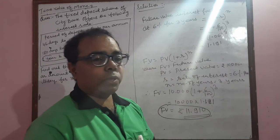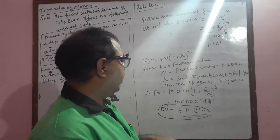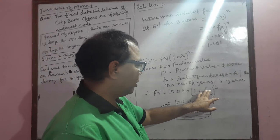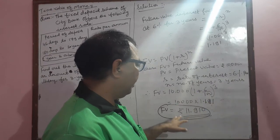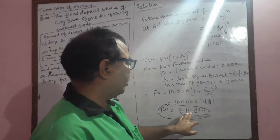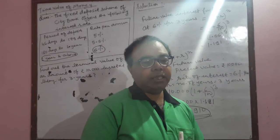So future value equals 10,000 into (1 + 6/100) to power 3. We will get 10,000 into this factor, which is 1.191, so the future value is 11,910.